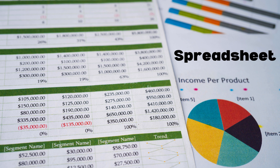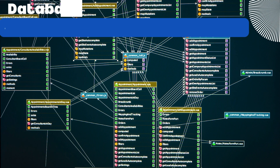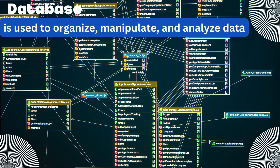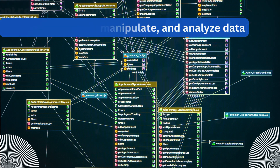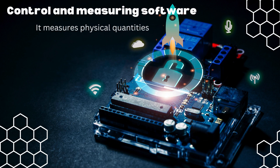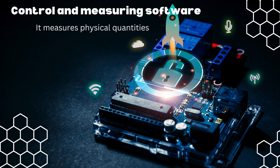Spreadsheet software is used to manipulate numerical data using formulas. It can do calculations and produce graphs. Database software is used to organize, manipulate, and analyze data. It can carry out queries and produce a report. Control and measuring software measures physical quantities by using sensors and is used in control applications.